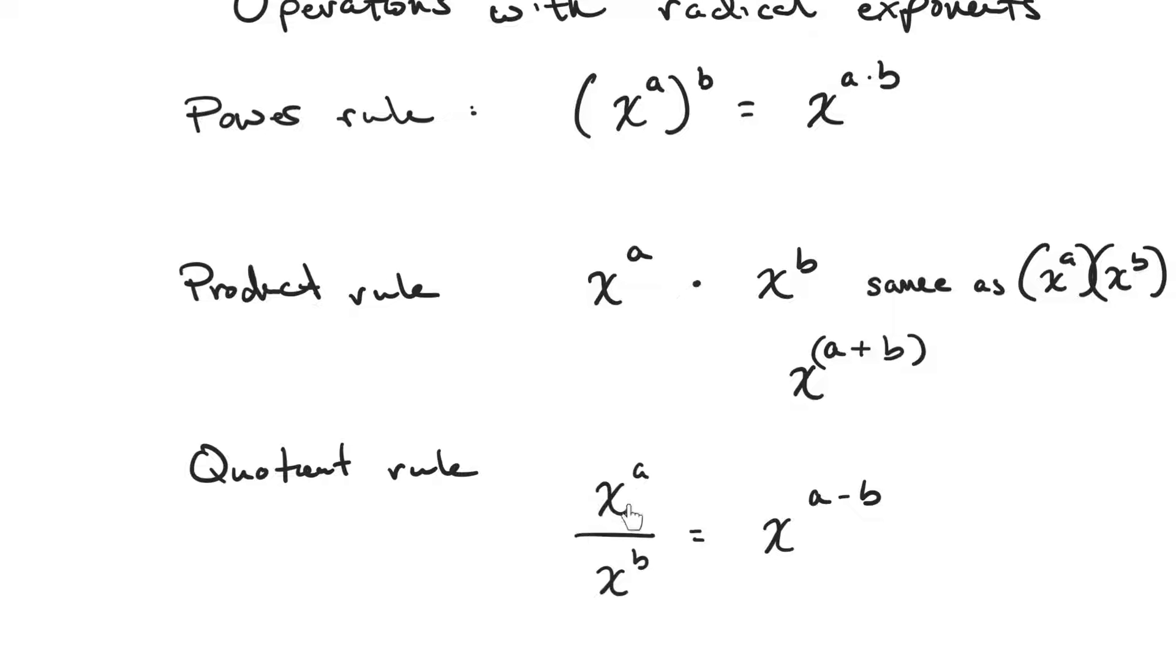Quotient rule states that if you have a fraction, and you have a base with an exponent divided by the same base with an exponent, that you can take their exponents and subtract them. Now, what's important is the order. So subtraction has order with it. So you must take the numerator and you must subtract the denominator from it. Okay, as time goes on, these will get a little bit more challenging, but for right now, that's it.